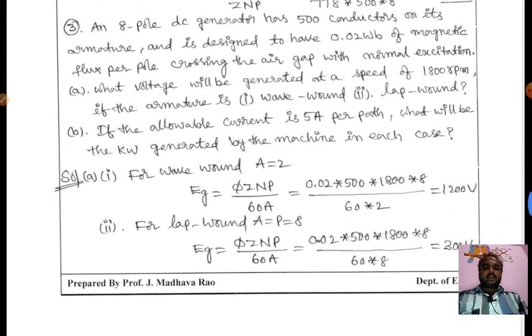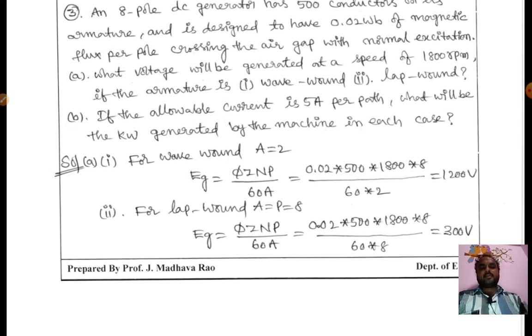We have to find out the generated voltage for both wave and lap wound, and the power generated. For wave wound, A = 2; for lap wound, A = P. Eg = φZNP/60A. Take the given values in the problem and substitute. For wave wound, generated voltage is 1200 volts. For lap wound, voltage is 300 volts.